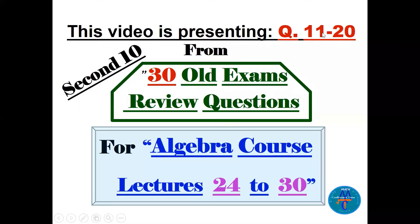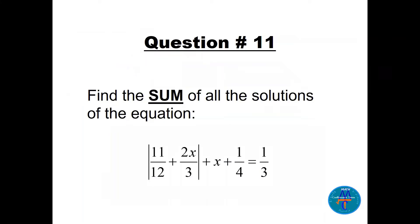How are you, my friends. This video presents the second 10 questions from the 30 old exams review questions that cover the algebra course from lectures 24 until 30. Lecture 24 covers other types of equations where we see quadratic in form and square root until we reach linear functions. Let's see question number 11: find the sum of all the solutions of this absolute value equation.